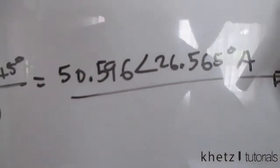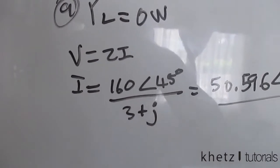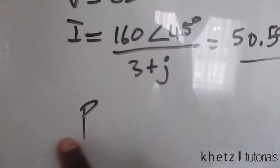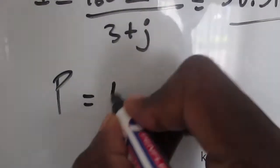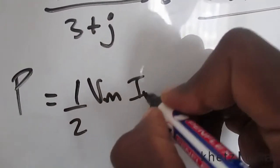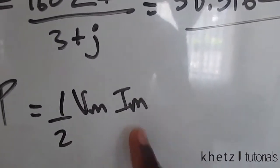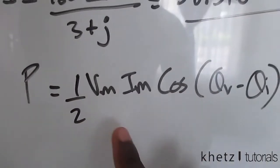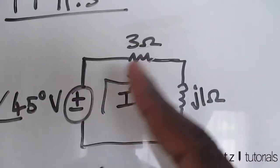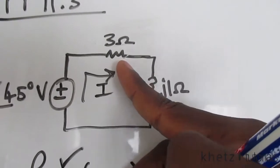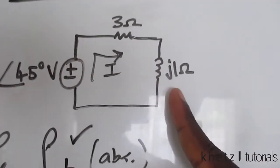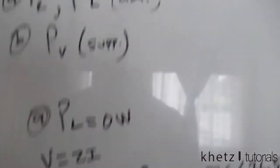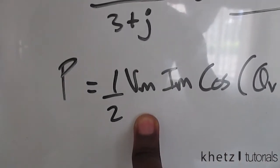To find the average power absorbed by the resistor, we know the average power is the real part of instantaneous power, given by one-half times Vm times Im times cosine of the angle of the voltage minus the angle of the current. Since all elements are in series, the same current flows through every element, so we focus on the voltage specifically across the resistor.